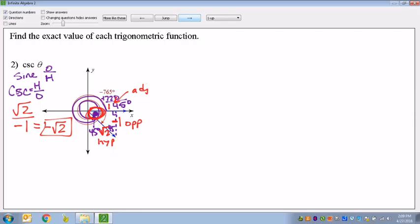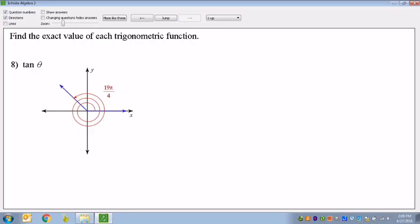All right, now that we've done that, let's do one more together. All right, so tangent of theta, 19 pi over 4.